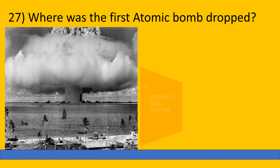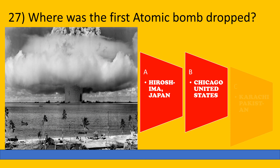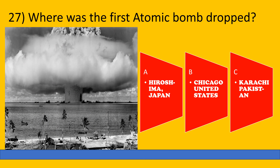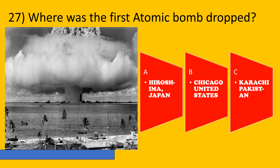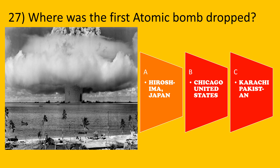Where was the first atomic bomb dropped? A: Hiroshima, Japan, B: Chicago, US, C: Karachi, Pakistan. The correct option is A, Hiroshima, Japan.